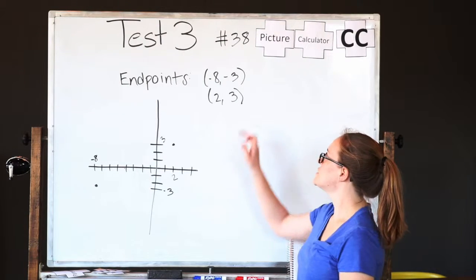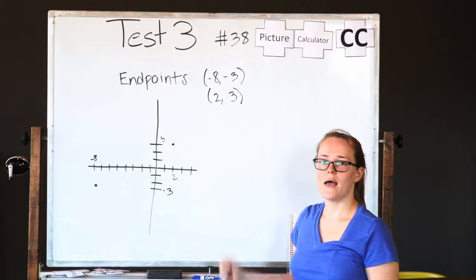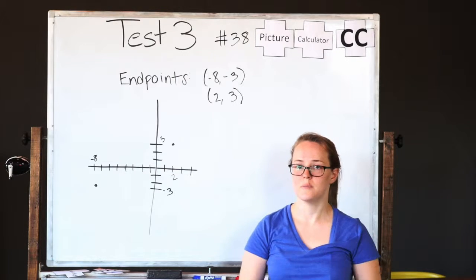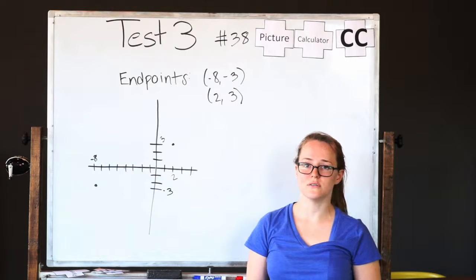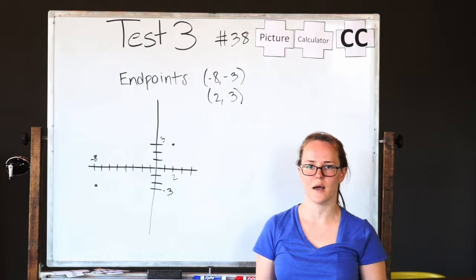All right, so what we've got here are two endpoints, negative 8, negative 3, and 2, 3. And the question is asking us how do we find the x value of the midpoint? And there's several ways you can do this just depending on what works best for your brain. So I'm going to go through a couple different options.